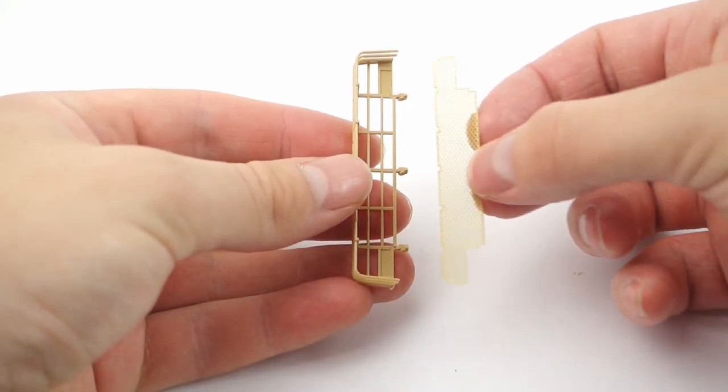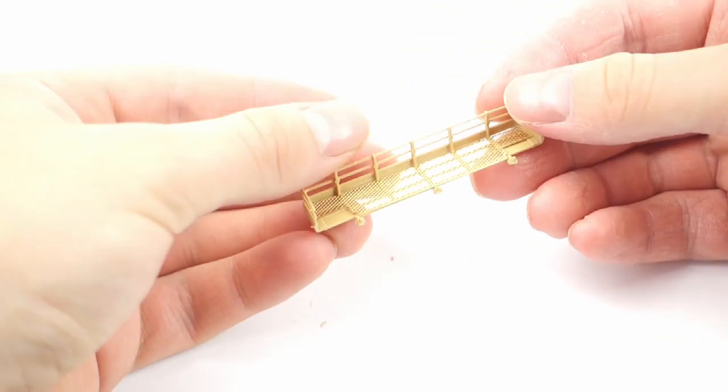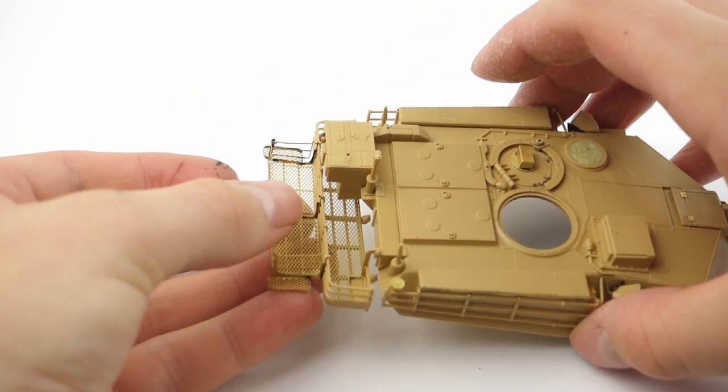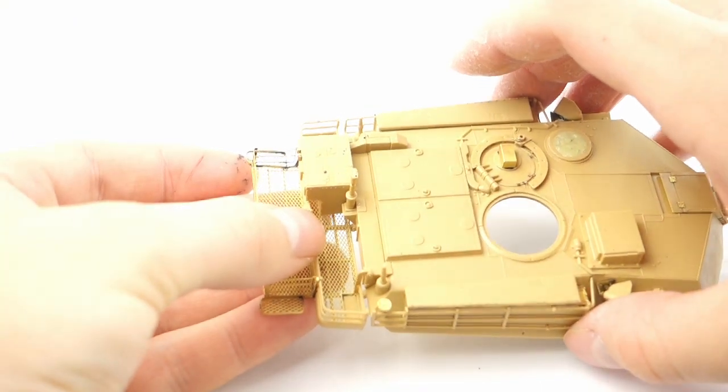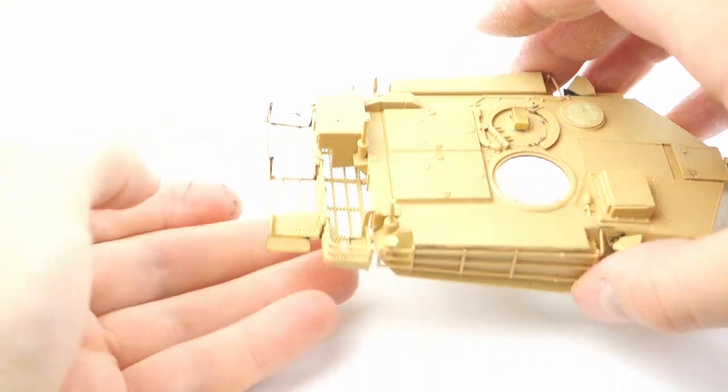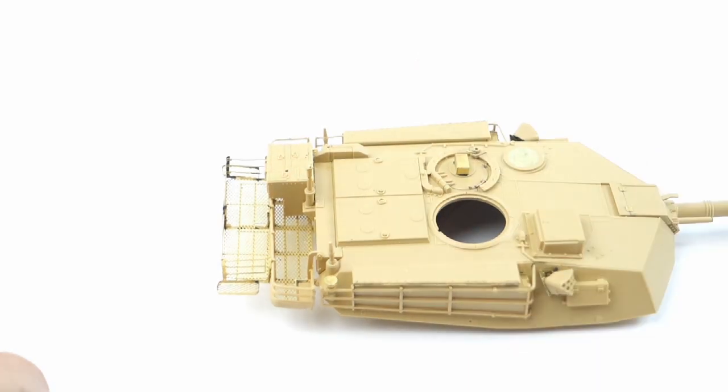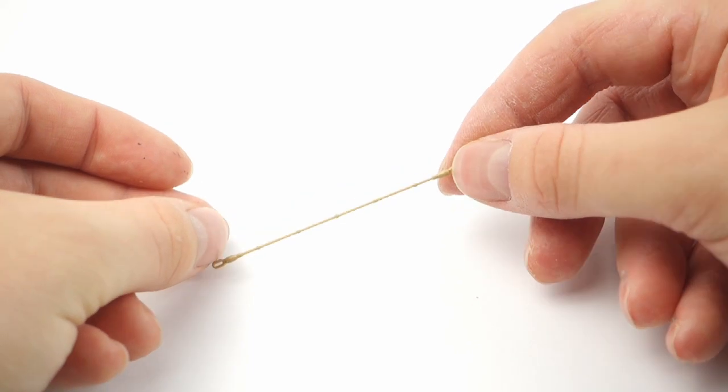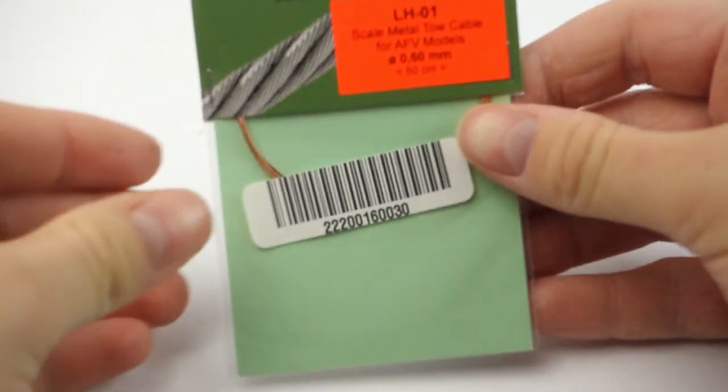The turret's storage basket is the part of the model that benefits the most from the PE set. Not only it includes the mesh for the main basket, but it also includes the additional one that's missing in the kit. It's complicated to assemble but looks great and gives more possibilities for adding stowage.